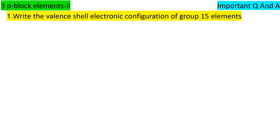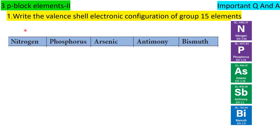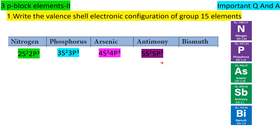Write the valence electronic configuration of group 15. Group 15 elements: Nitrogen 2S2 2P3, Phosphorus 3S2 3P3, Arsenic 4S2 4P3, Antimony 5S2 5P3, Bismuth 6S2 6P3. That is the electronic configuration.